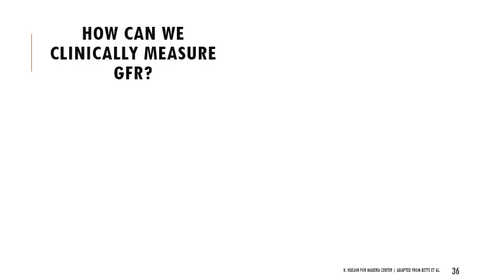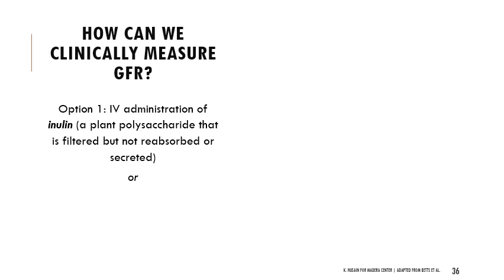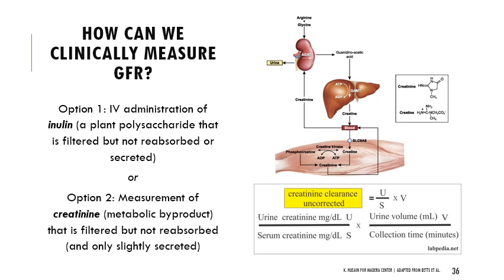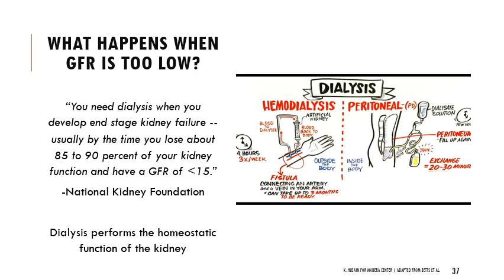We might want to quantitatively measure GFR in a clinical setting. One way is to administer inulin, a plant polysaccharide, through an IV — it goes through filtration but is not reabsorbed or secreted, giving a clean look at filtration rates. You can also look at creatinine, a metabolic byproduct of creatine that is filtered and not reabsorbed, only slightly secreted — a very common way to measure filtration rates. When GFR is too low, dialysis is needed: hemodialysis (external) or peritoneal dialysis (internal).